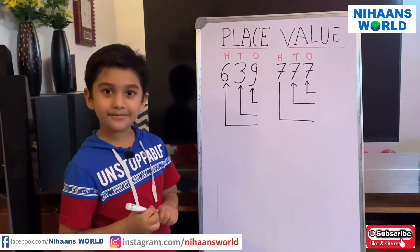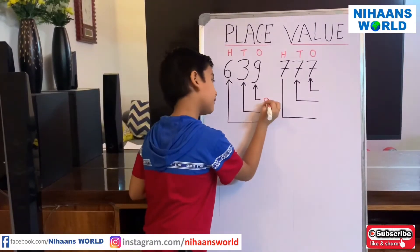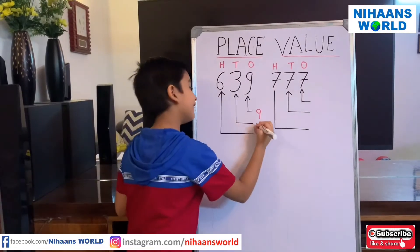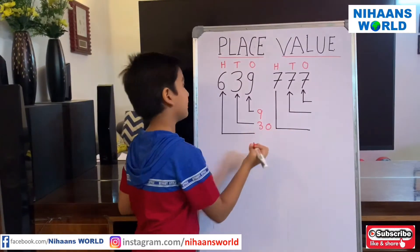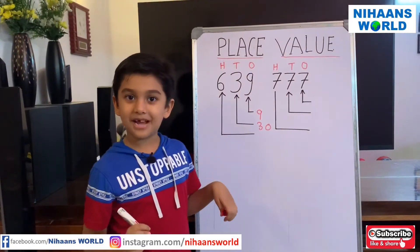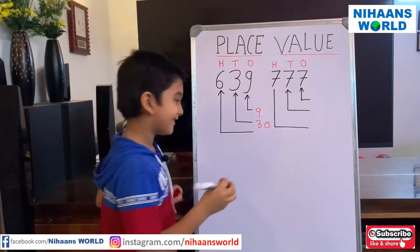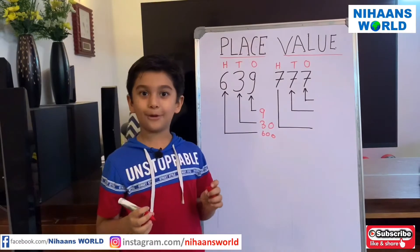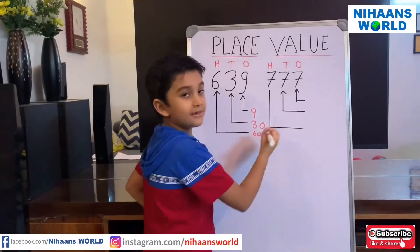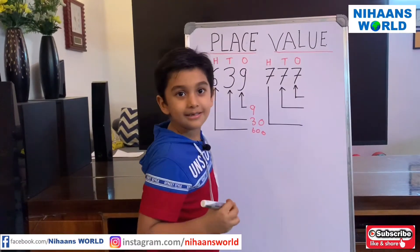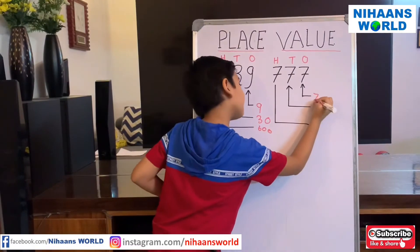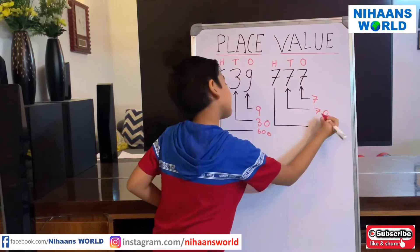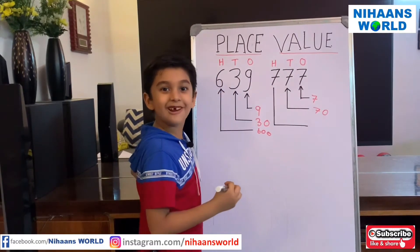9's place value is 9, so we write 9 here. 3's place value is 30, and 6's place value is 60. Let us see example number 2. 7's place value is 7, 7's place value is 70, and 7's place value is 700.